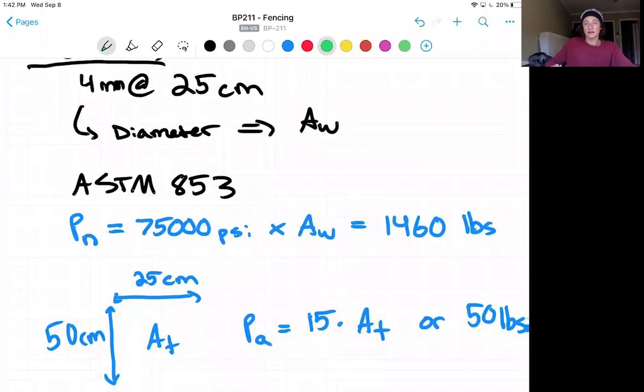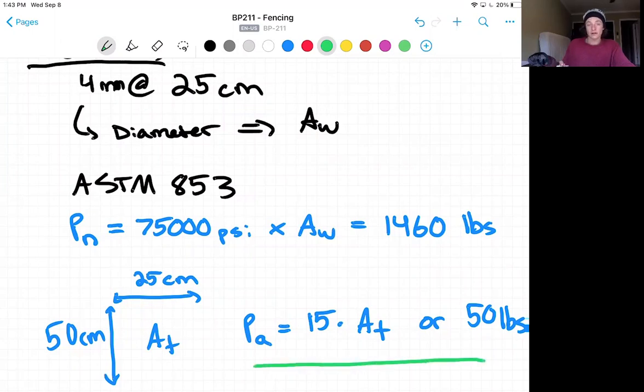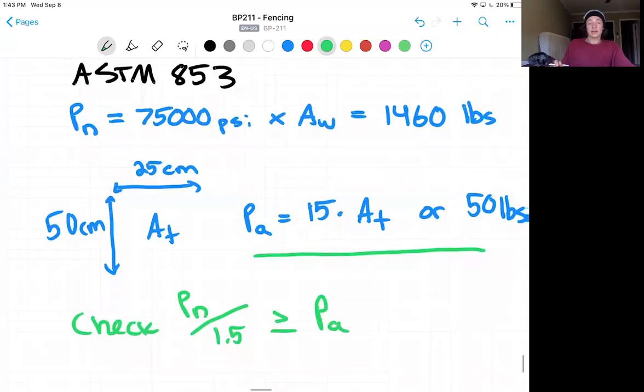Now to find the force on the tie wires themselves, we are going to take the greater of 15 PSF times our tributary area or 50 pounds. Now using the details, we find that our tributary area of wire between cables is going to be the 50 centimeters times the 25 centimeters spacing in the worst case scenario. So you could do the math here to see what is going to govern. And once again, we'll take the nominal capacity divided by 1.5, the allowable stress design, and we'll make sure that is greater than or equal to our demand loading.